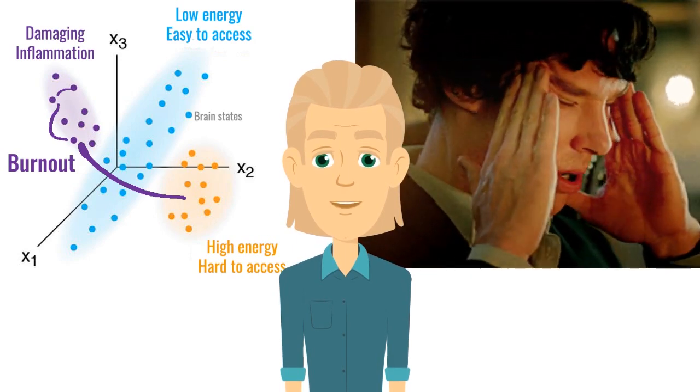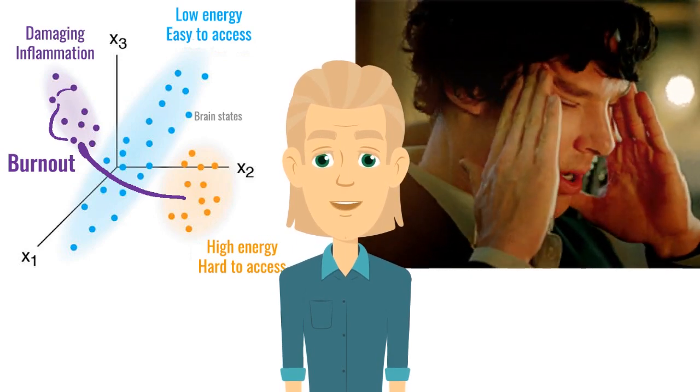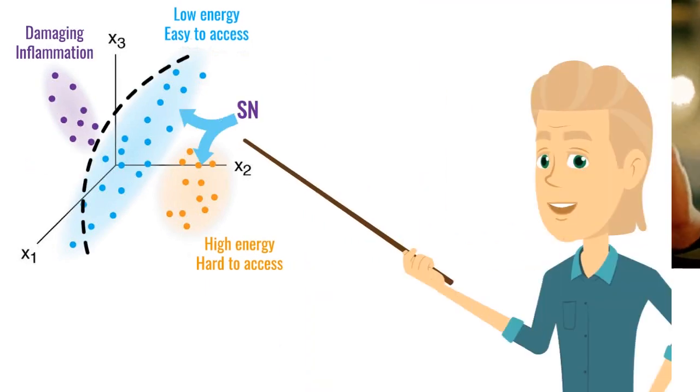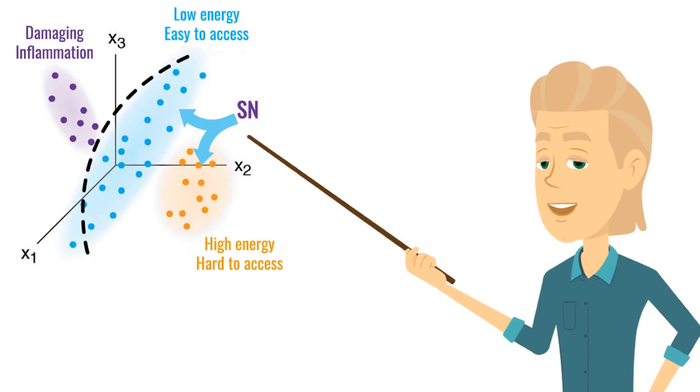These damaging brain states may result in self-focused rumination and negative self-evaluations. The network that coordinates sufficient switching between the default mode and executive control networks, depending on the context, and which helps shield the mind from damaging rumination, is the salience network.